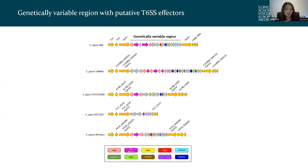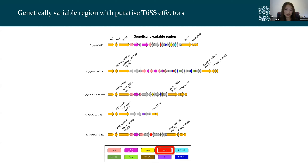We further analyzed the genes in this variable region using predictive tools, revealing a number of putative effectors and immunity genes. We identified multiple effectors with predicted Tox-RY7 domains, another protein with a Tox-AH domain — part of large toxin superfamilies with predicted functions such as DNases and nucleases. We also identified a protein with a TNT (tuberculosis necrotizing toxin) domain; in Mycobacterium tuberculosis, TNT is a glycohydrolase that depletes NAD+ within host cells, causing cell death. A number of ankyrin-repeat-containing proteins located adjacent to putative effectors were also identified, hypothesized to be their cognate immunity proteins.